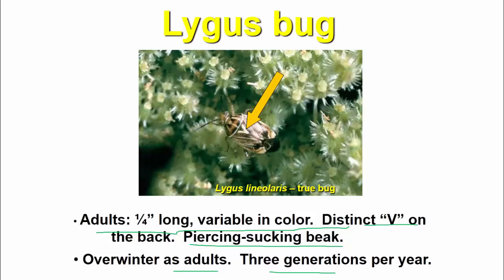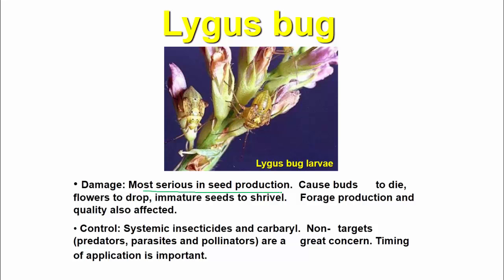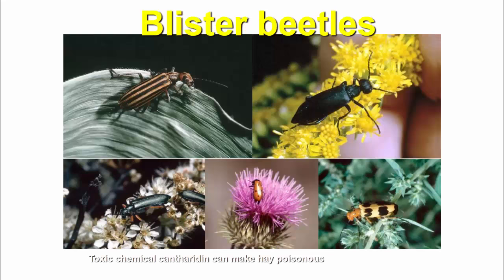The lygus bug damage is most serious in seed production. It causes buds to die, flowers to drop, and immature seeds to shrivel. Forage production and quality are also affected. Control is achieved using systemic insecticides.